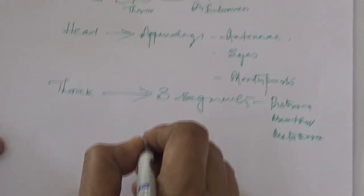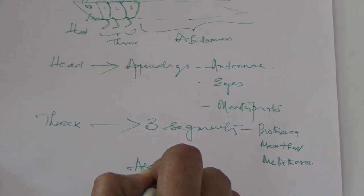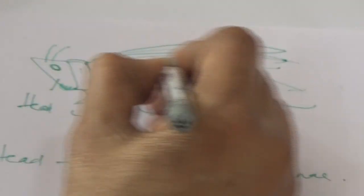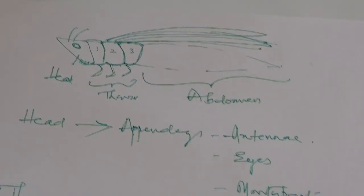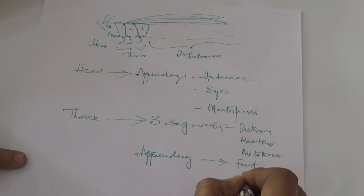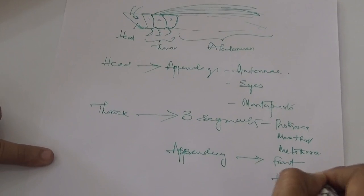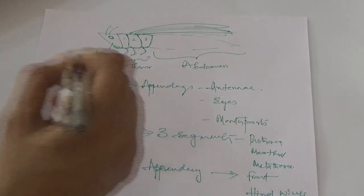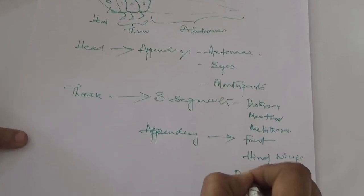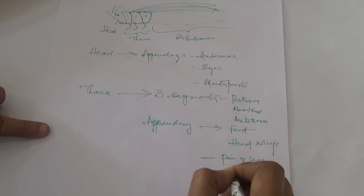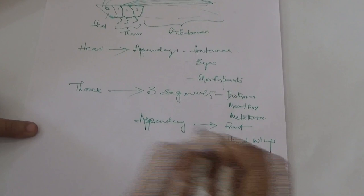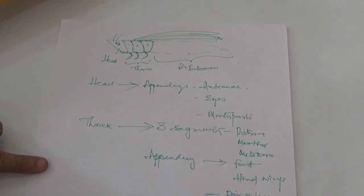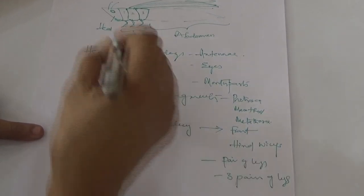Now for the appendages on the thorax: number one is a pair of wings on the meso and metathoracic segments — front wings on the mesothorax and hind wings on the metathorax. On the lower side you find a pair of legs on each segment, so there are totally three pairs. One pair on prothorax, second pair on mesothorax, third pair on metathorax. Any insect should have three pairs of legs.